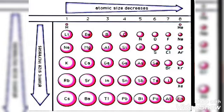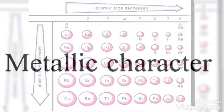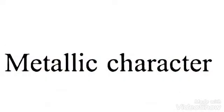Atomic size decreases in a period from left to right because as we move from left to right, atomic number increases. With the increased atomic number, the number of electrons also increases. This results in an increased effective nuclear charge. Therefore, the entire shell gets attracted towards the nucleus.